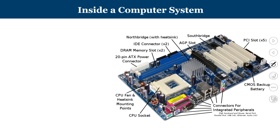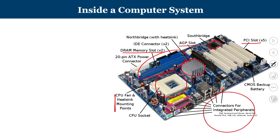If you look at what is inside a computer system, this is typically a motherboard. The most important component is where the CPU IC is placed, with the fan and heat sink on top. There are DRAM slots for primary memory, a north bridge and a south bridge, an accelerated graphics port (AGP), a peripheral controller interconnect (PCI), and various connectors for I/O devices.